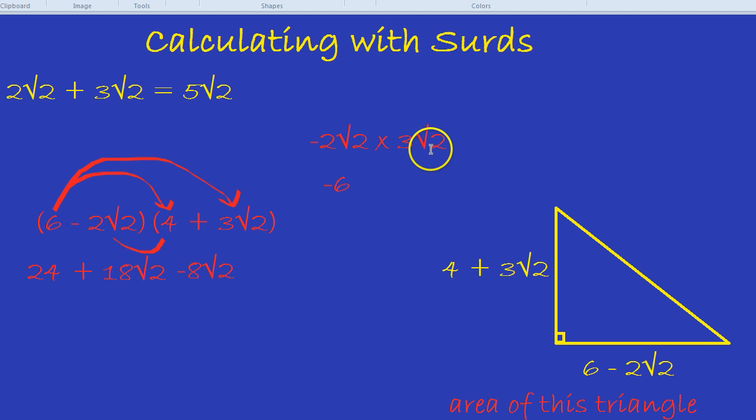Then you do the roots. So root 2 times root 2. What's root 2 times root 2? It's 2. So that bit becomes 2. Finally, you need to multiply together your two answers. The answer you got when you multiplied the numbers. The answer you got when you multiplied the roots. Finally, multiply those two answers. Minus 6 times 2 is minus 12.